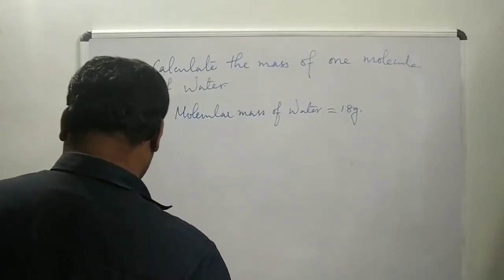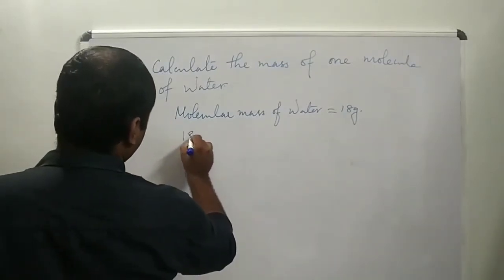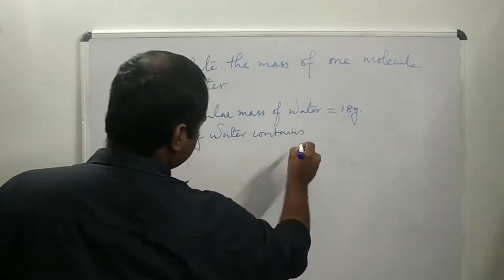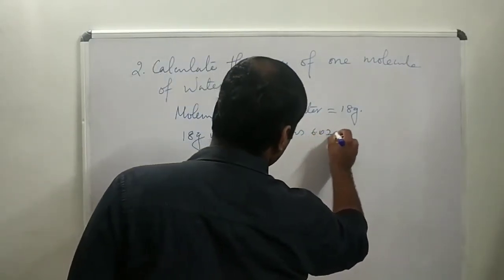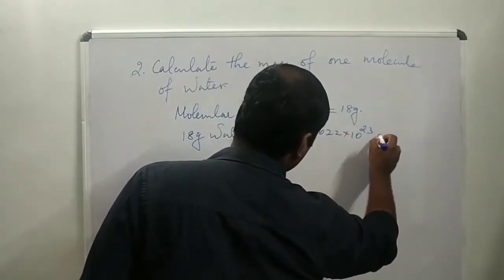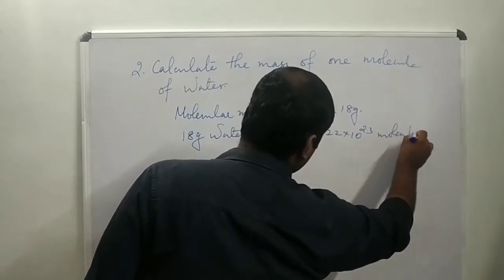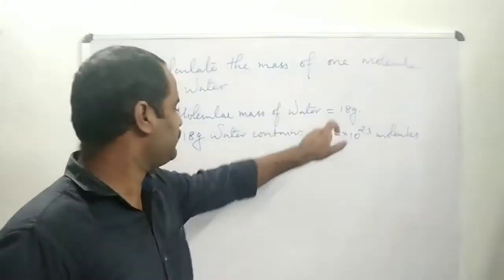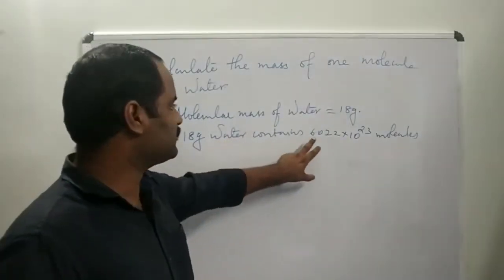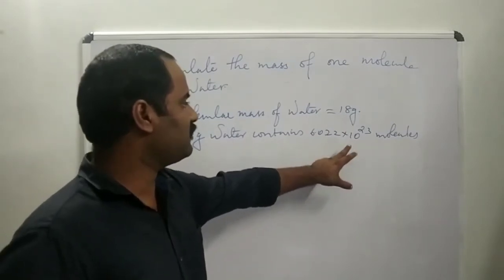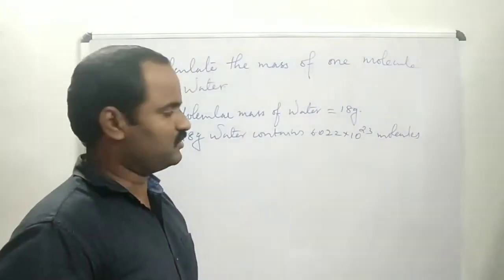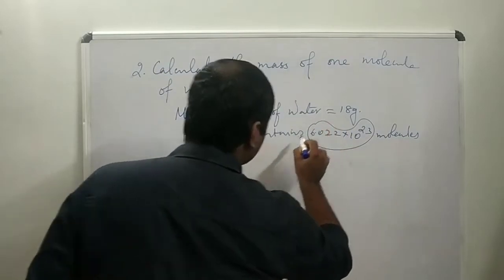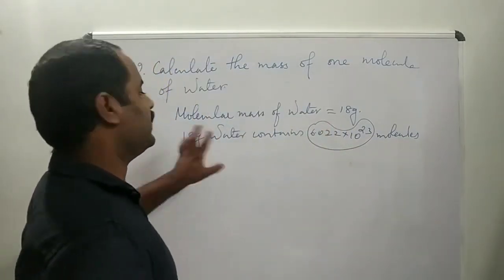This is one mole, so 18 grams of water contains Avogadro's number of particles — that is, 18 grams of water contains 6.022 × 10²³ molecules. So the mass of 6.022 × 10²³ molecules is equal to 18 grams.